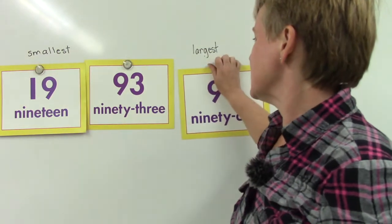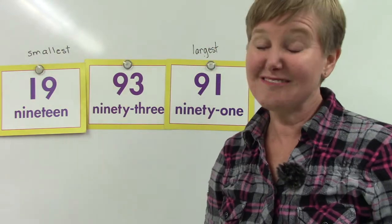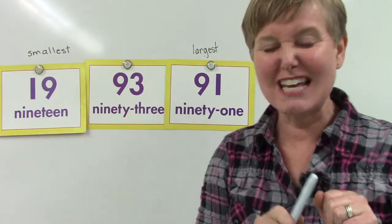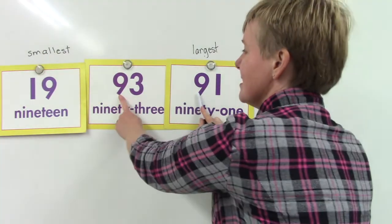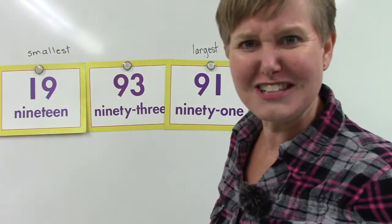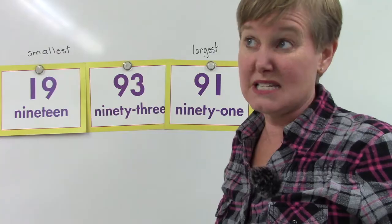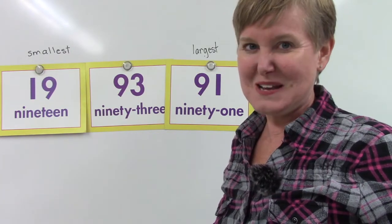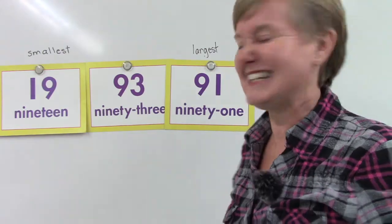Now we have 93 and 91. Let's take a closer look — we're going to start looking at the tens place again. We have a 9 and a 9. They're the same. If they're the same, does that mean the numbers are equal? No — it means we need to look at the ones place.